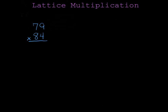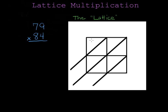Let's try one more problem with slightly larger numbers. Let's do seventy-nine times eighty-four. Again, the first thing we need to do is have a lattice. This lattice is set up for a two-by-two problem. I write one number across the top — seventy-nine — and the other number going down the right-hand side — eighty-four. The first step of the lattice is always to fill in the boxes using multiplication.